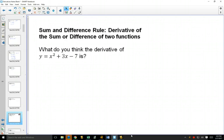We're going to look at the sum and difference rules. So what this says is if you have a bunch of things added together, what do you think the derivative of x squared plus 3x minus 7 is? Well, it's rather simple. In fact, it goes with what your gut feeling would be.